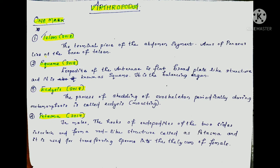The third question is ecdysis, asked in 2018. Ecdysis is called molting — the shedding of the exoskeleton. The body changes and development associated with shedding of the exoskeleton is called molting or ecdysis, related to metamorphosis.